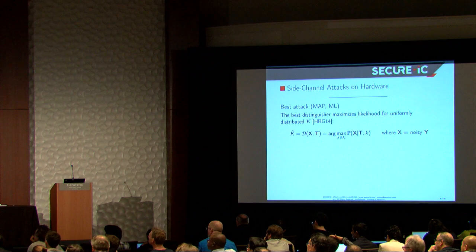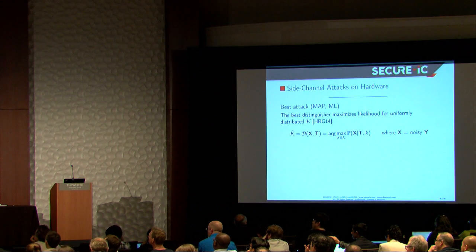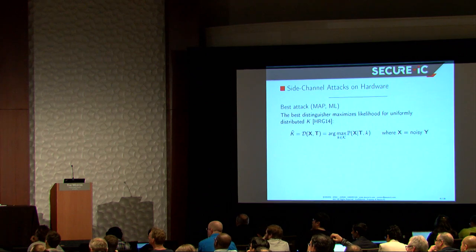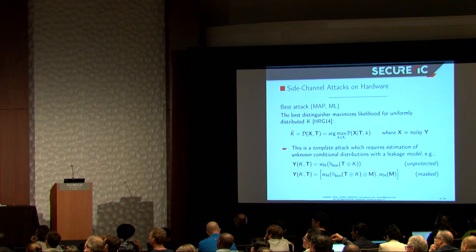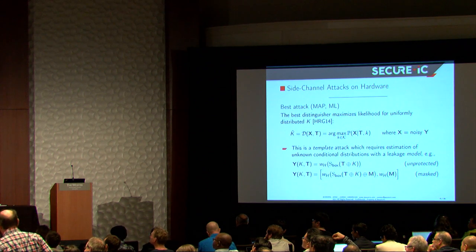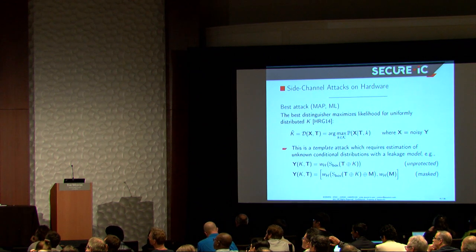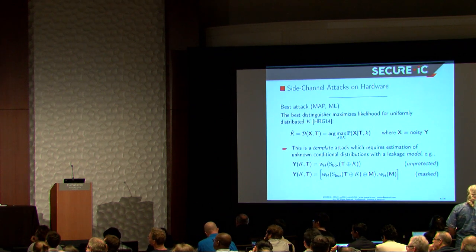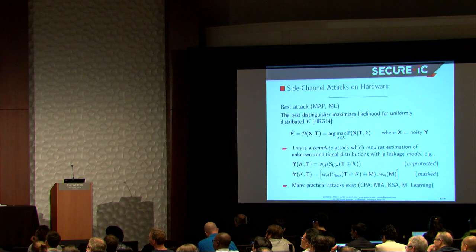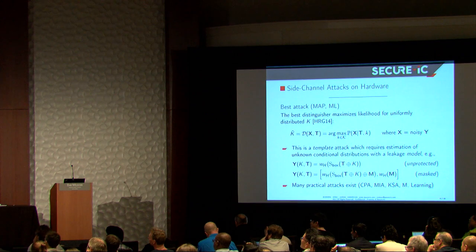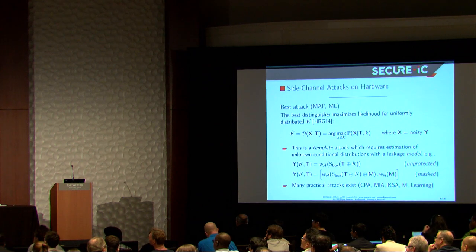So from that time five years ago, we know that the best distinguisher consists actually in maximizing the likelihood. So this is a way to recover the key with the best success probability. Also, we call that in the chess community a template attack. And it can apply to many cases. For instance, Hamming weight I was mentioning, or can be if you have M the mask which is unknown, so the variable which is leaked is this pair. Many attacks were suggested, and there is an effort now also to do some clever attacks using artificial intelligence.